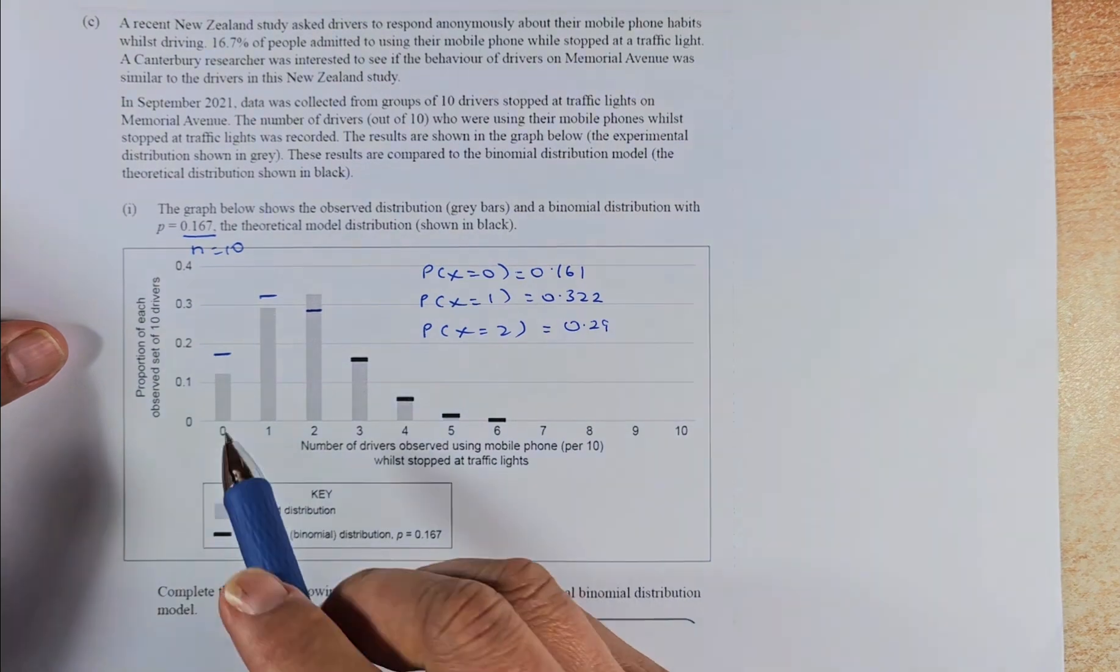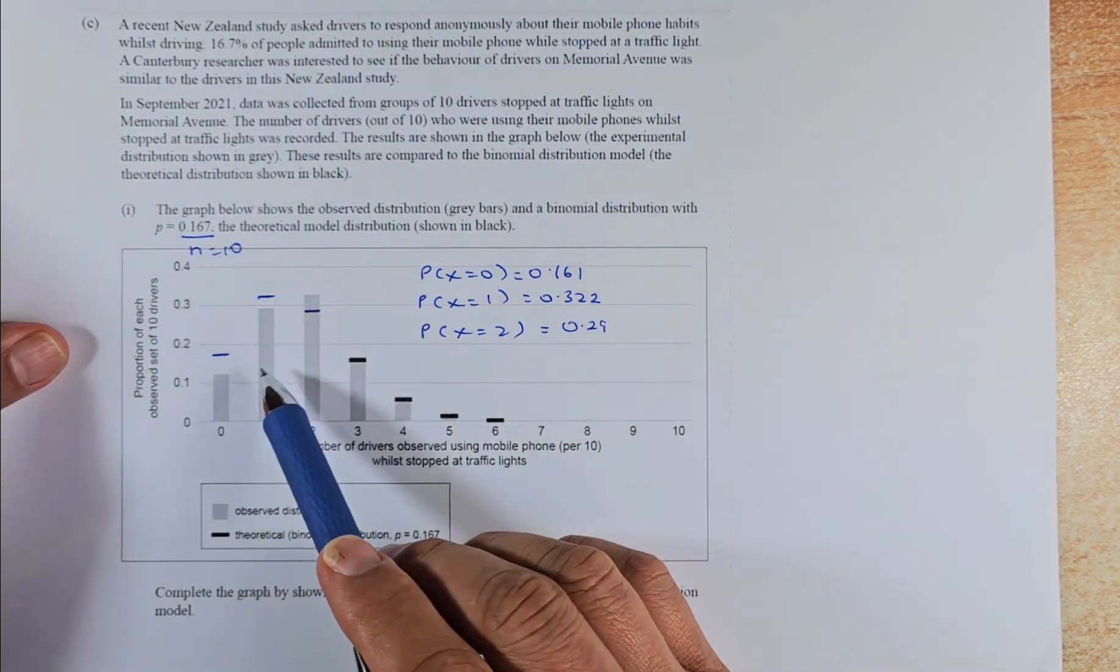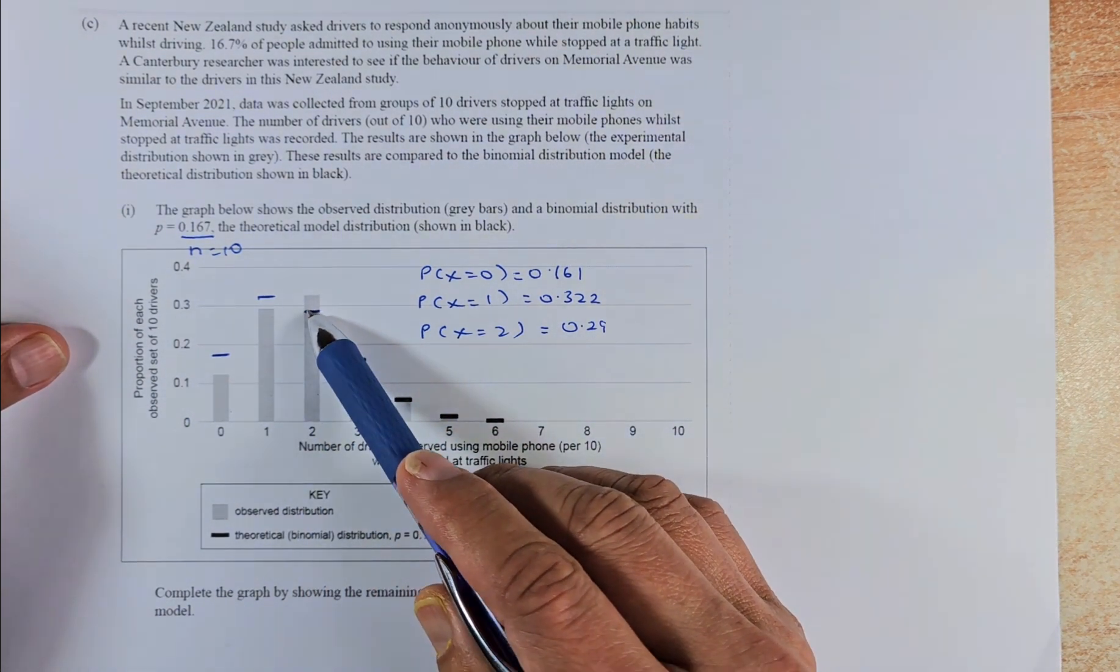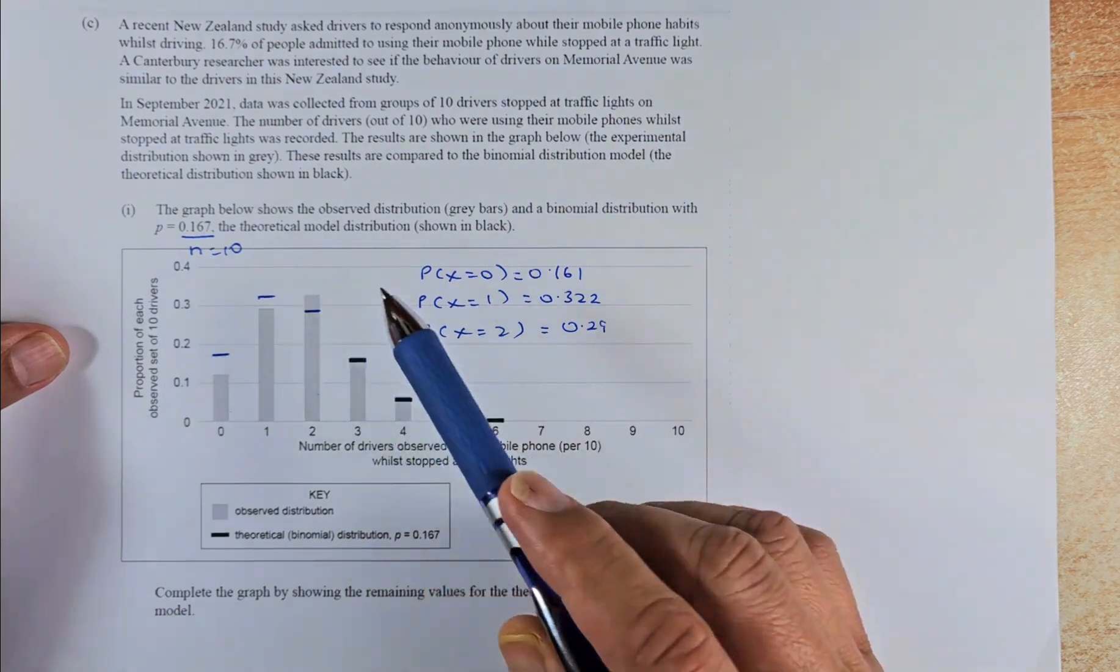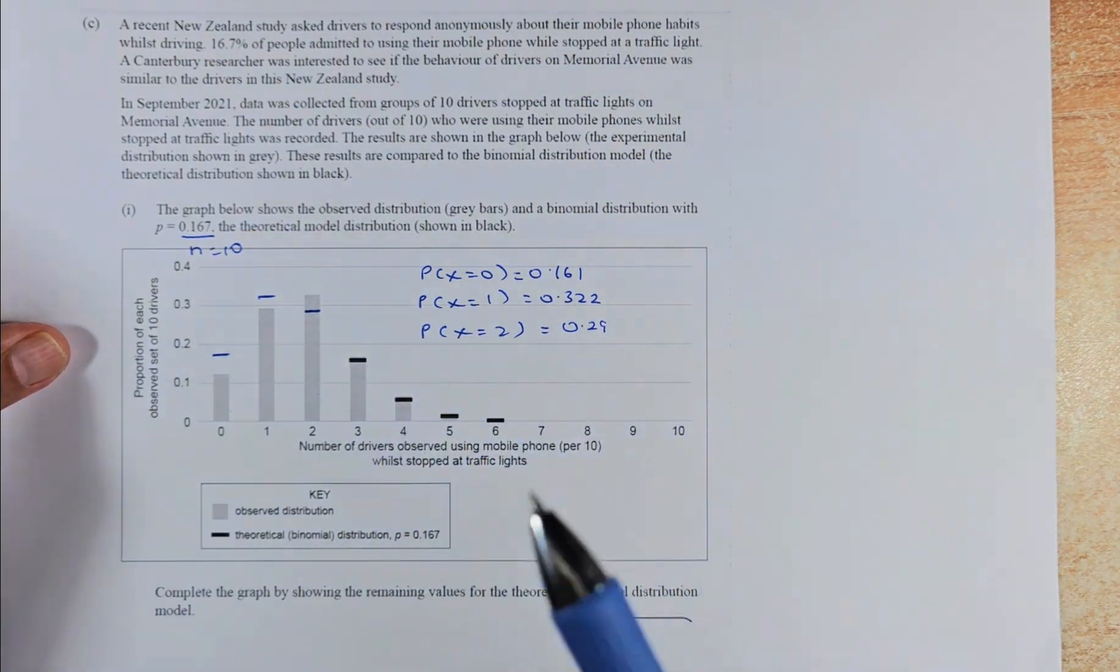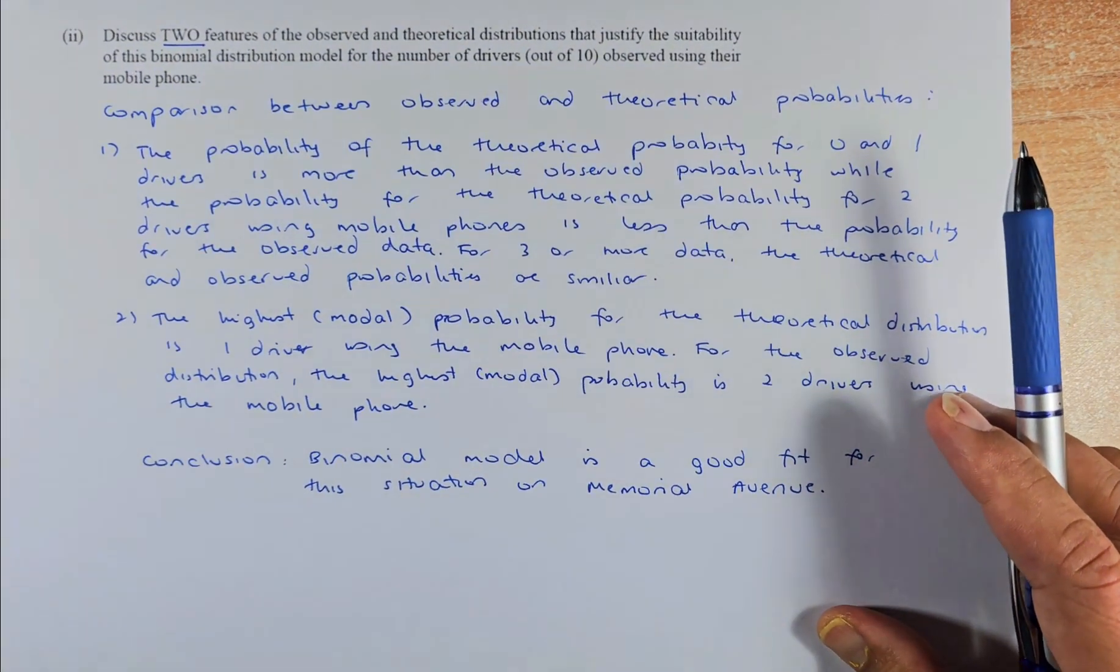So if you see 0 and 1, the theoretical probability is higher than the observed probability. While for 2, the theoretical probability is lower than the observed. For 3, 4, 5, 6 and above, they are about the same. So that's what is meant by the first point. So we're going to do the second point now.